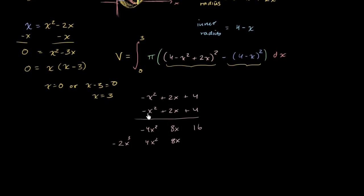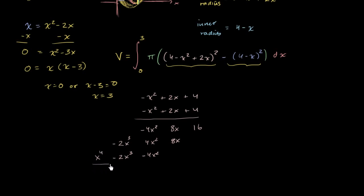And now we just have to multiply negative x squared times all of this. Negative x squared times 4 is negative 4x squared. Negative x squared times 2x is negative 2x to the third power. And then negative x squared times negative x squared is positive x to the fourth. So now we just have to add up all of these terms.